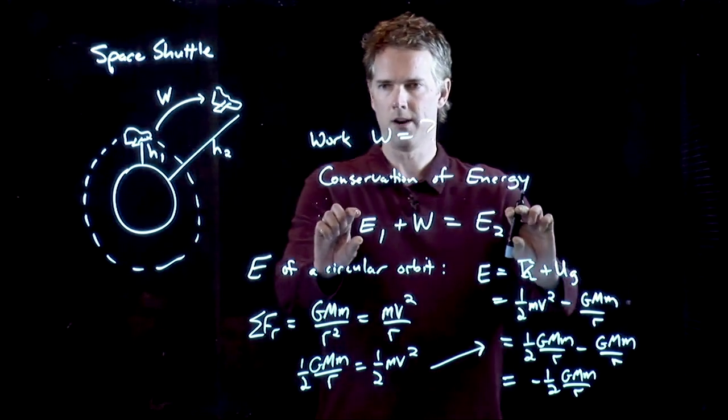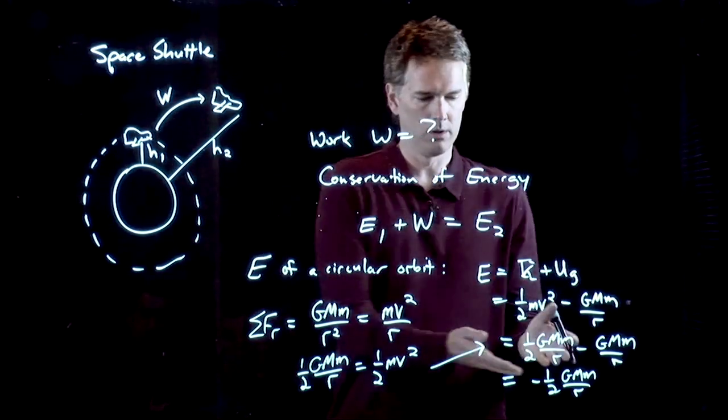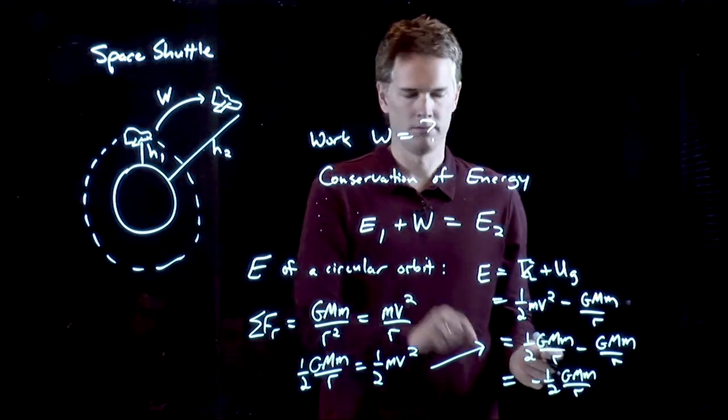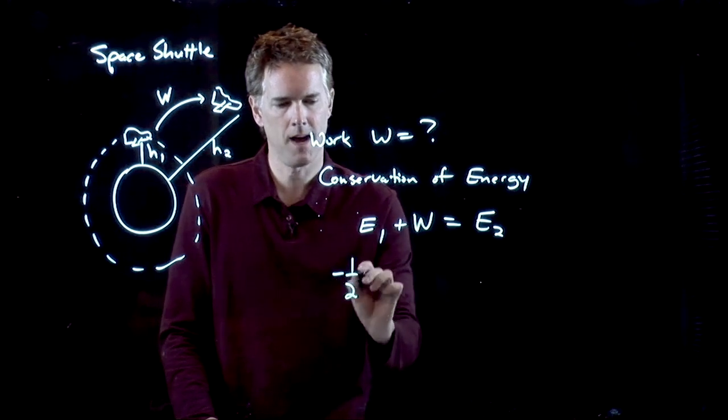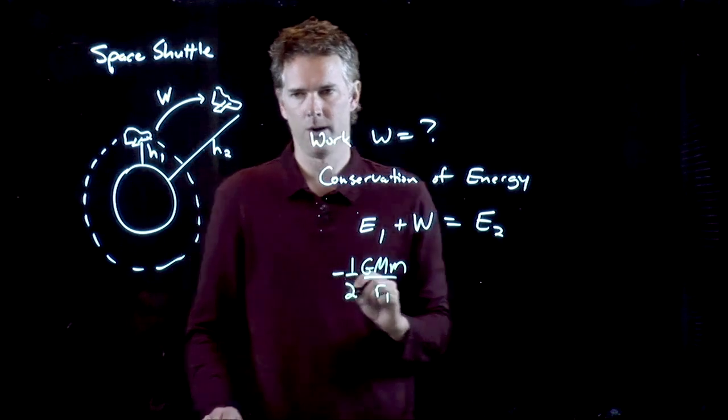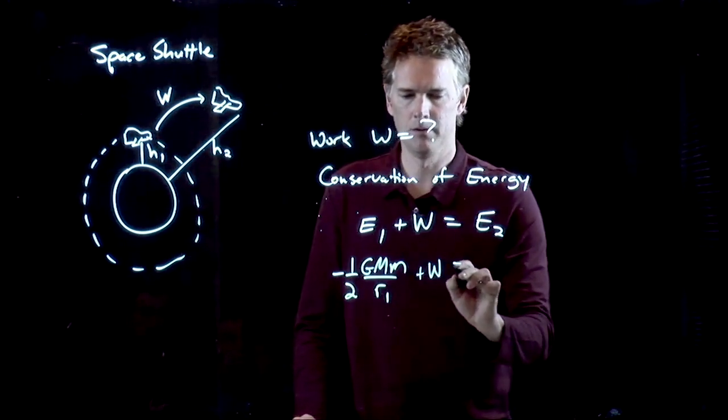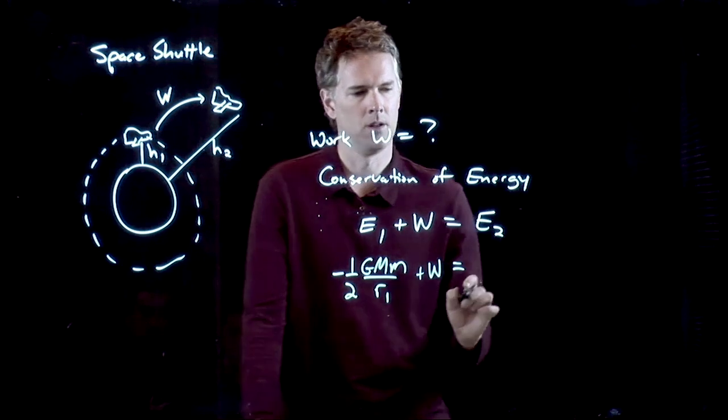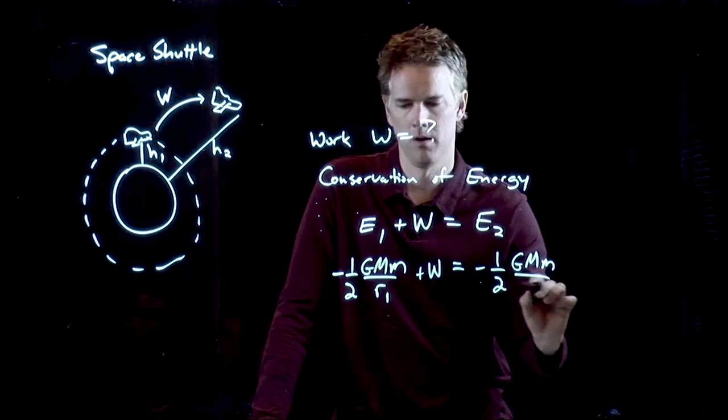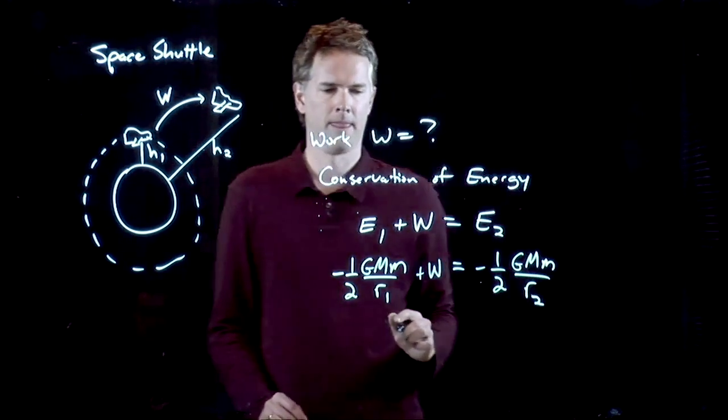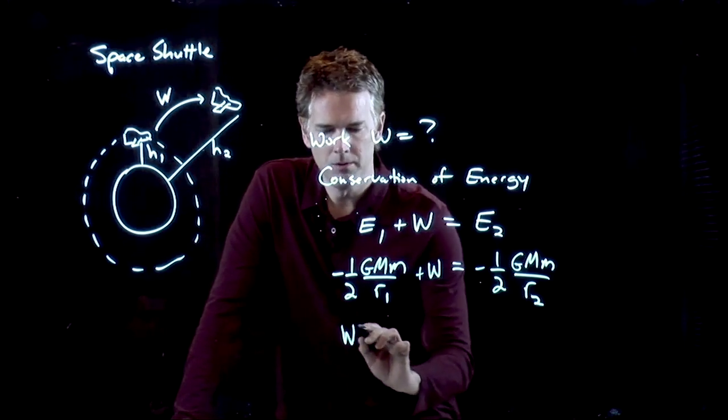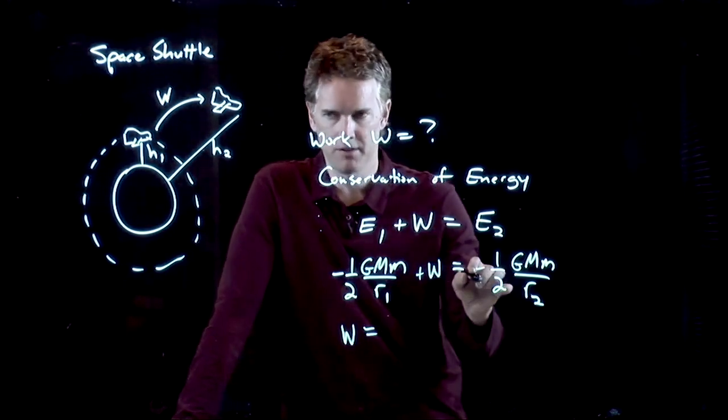Let's go back to this equation right here now and use this as our E. Negative 1/2 GMm over r1 plus W equals negative 1/2 GMm over r2. So I get 1/2 GMm over r1 and I'm going to add this to the other side.